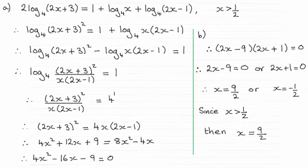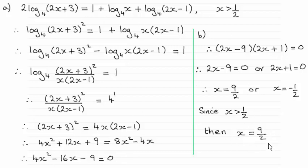Hi there. For this question we are asked to show that this equation here reduces down to the quadratic equation 4x squared minus 16x minus 9 equaling 0. You can check out my working here. And then in part B we had to go on and find the value of x which satisfied this equation, and it turned out to be 9 over 2, or 4 and a half.